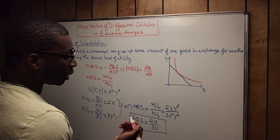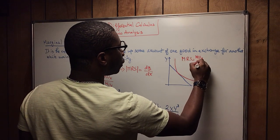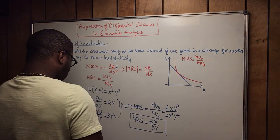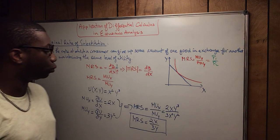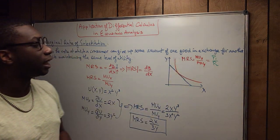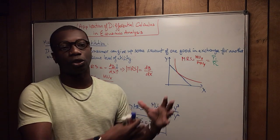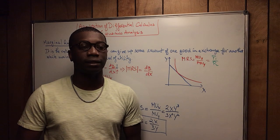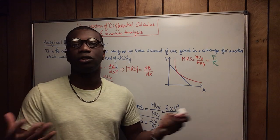What is interesting to know is that the marginal rate of substitution, MUX over MUY, also equals the budget constraint line, which is P1 over P2. I'm not going to get into the budget constraint here, but I want you to understand there is a relationship between the marginal rate of substitution and the budget constraint. The budget constraint is when the consumer wants to determine how to maximize utility given a budget over two goods.